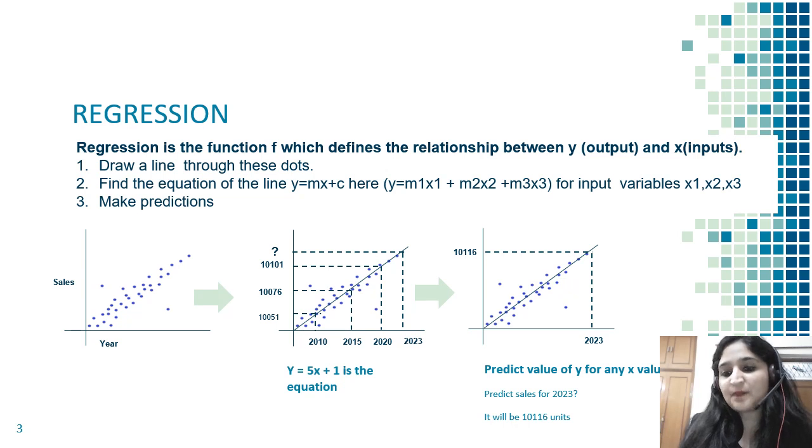This is how you predict any y given x using regression - connecting these dots so that the majority are covered and we unearth the underlying function f which joins y and x together.